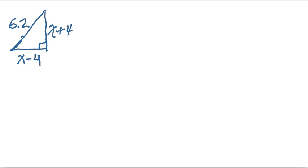We know the longer leg is going to be some number x plus 4, and the shorter leg is going to be some number x minus 4. So I don't know if this is drawn to scale or not. And we know what the hypotenuse is is 6.2.